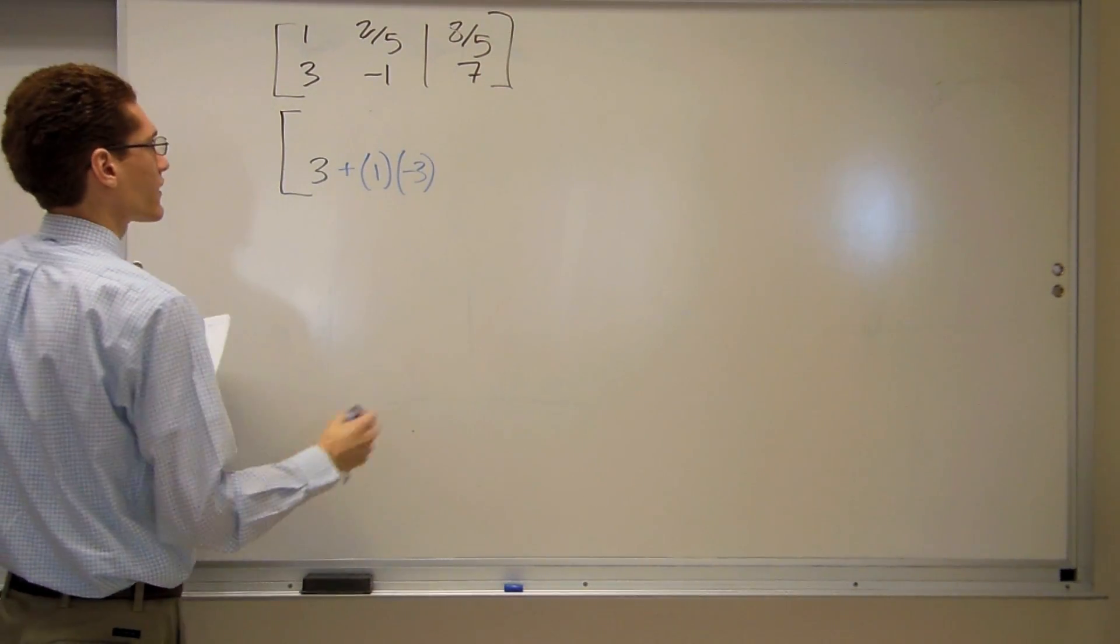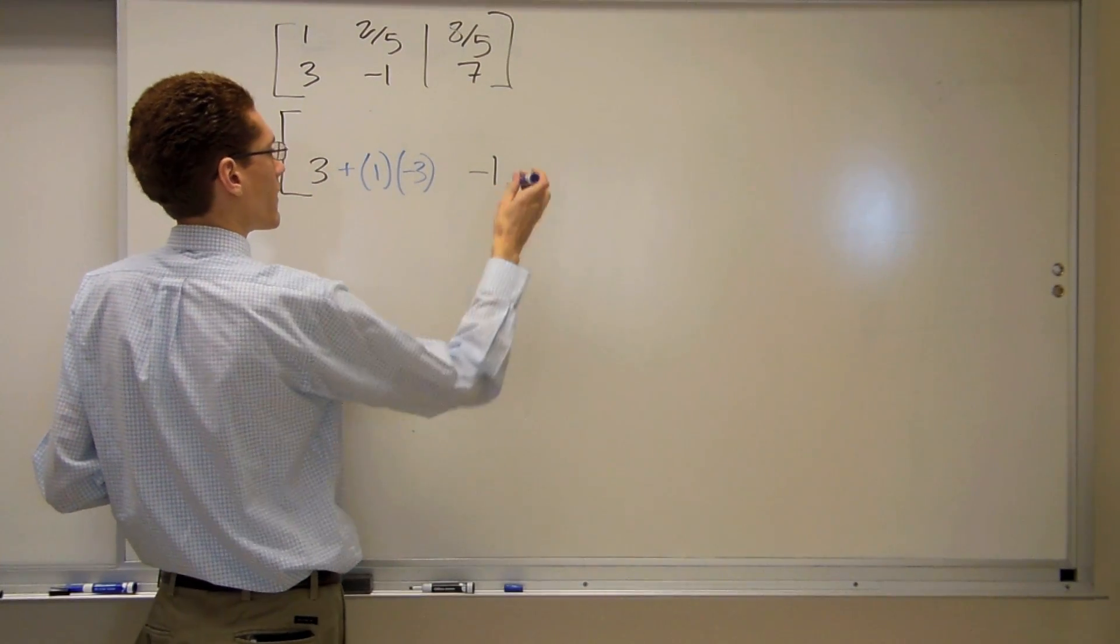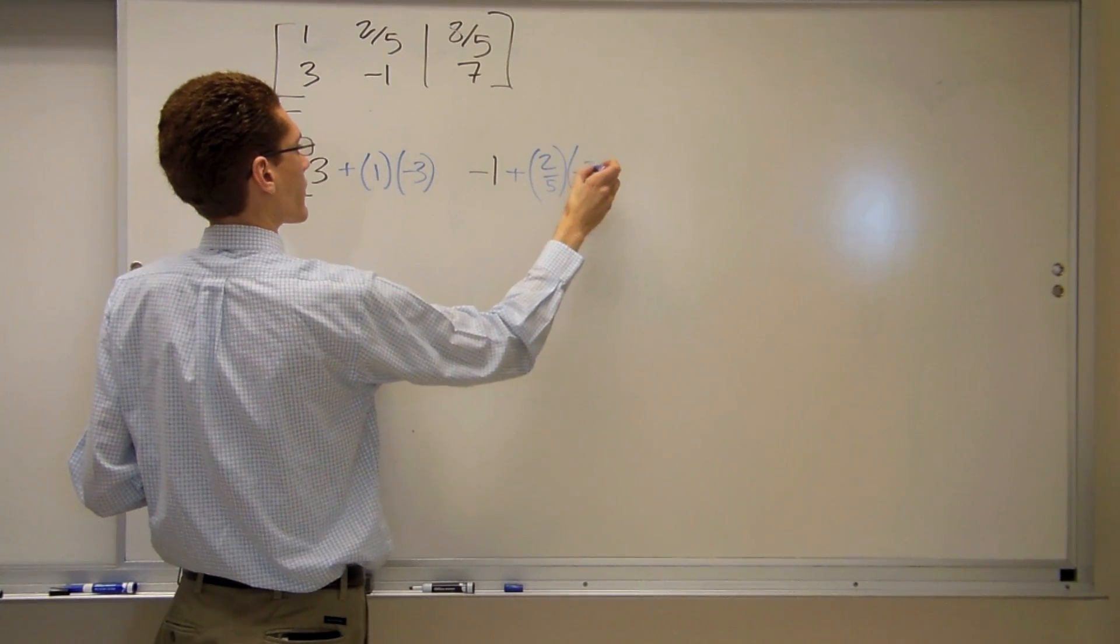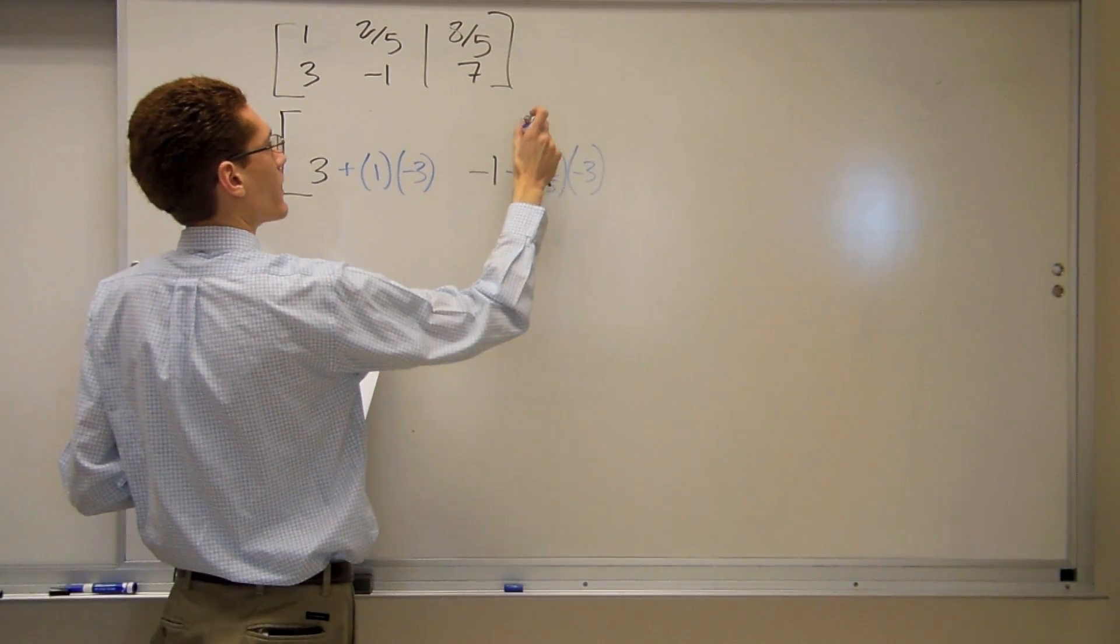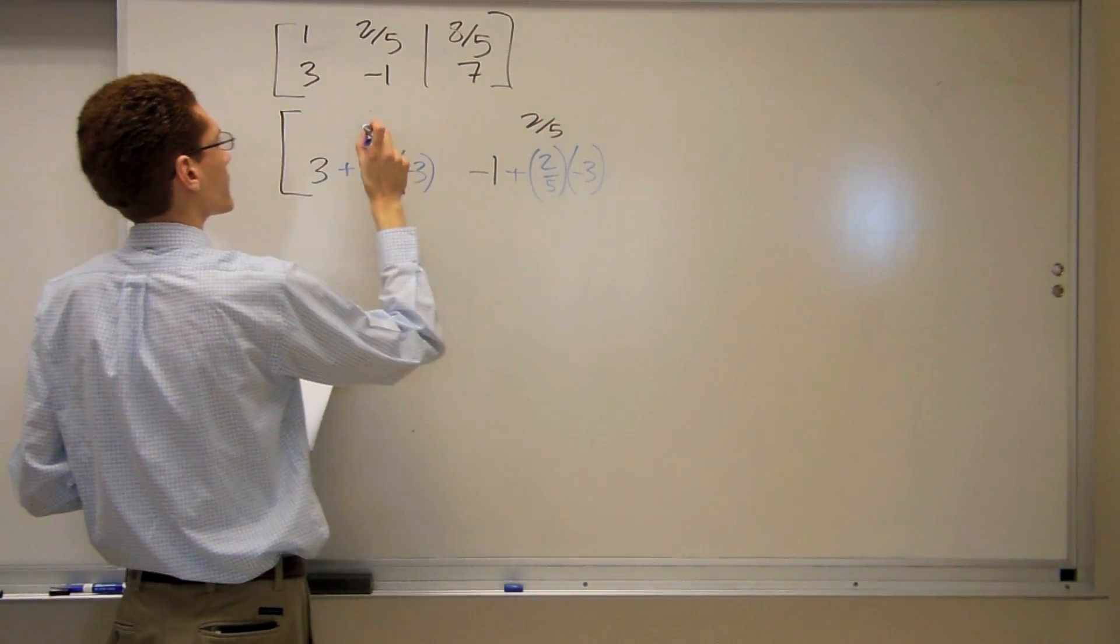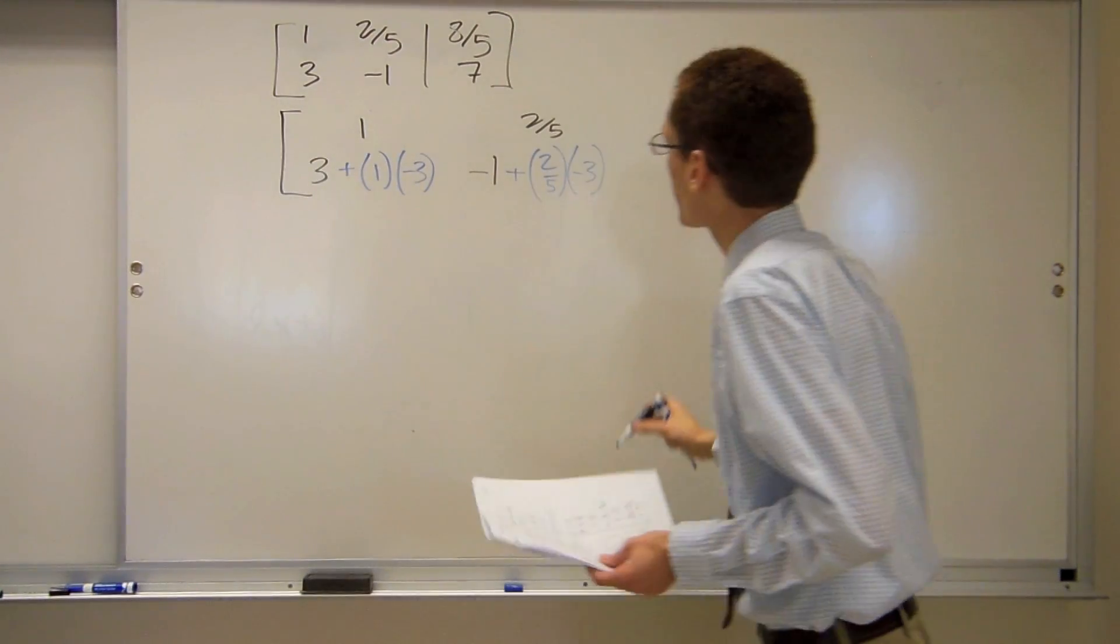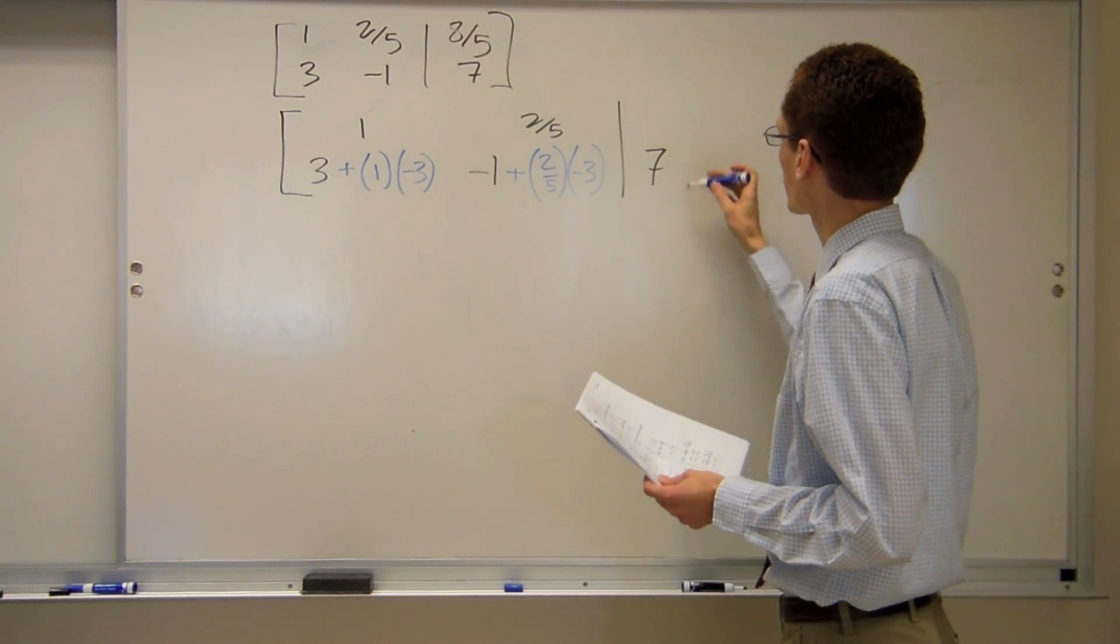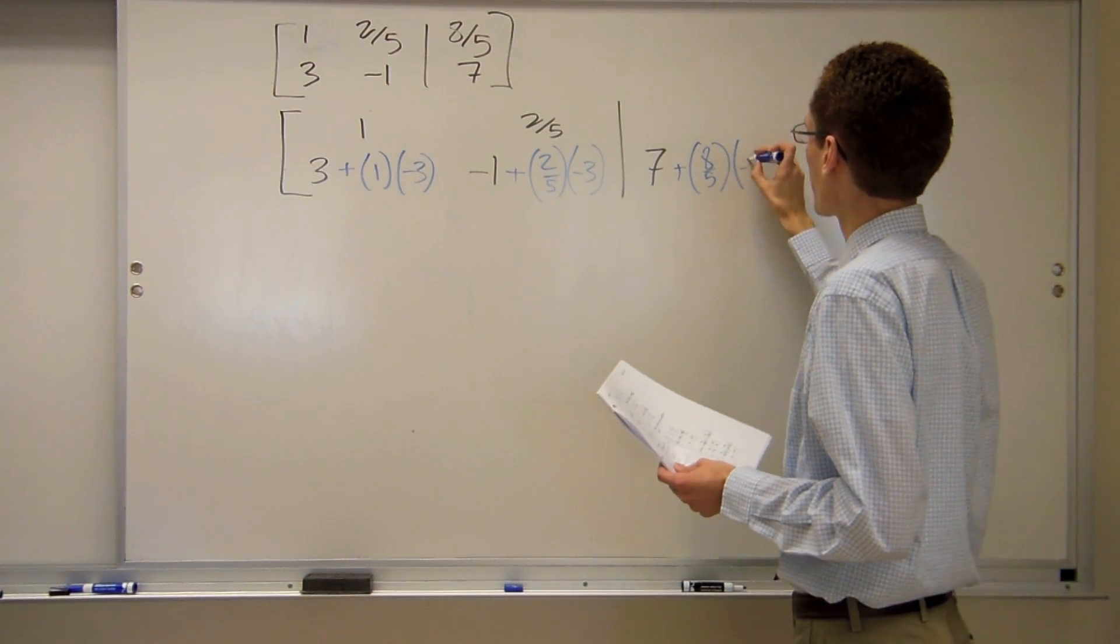So I'll do that with the next terms as well. We have negative 1 plus 2 fifths times negative 3. Again, the 2 fifths came from the line above.